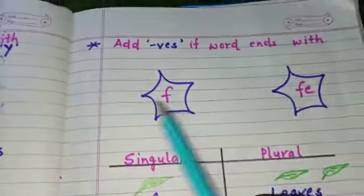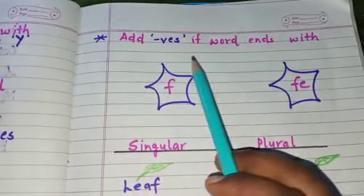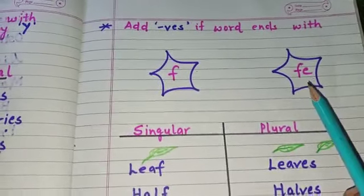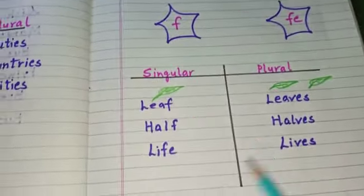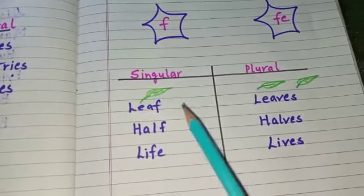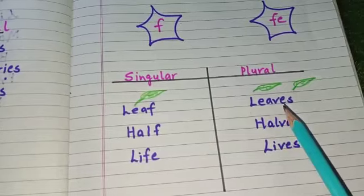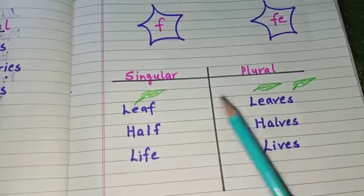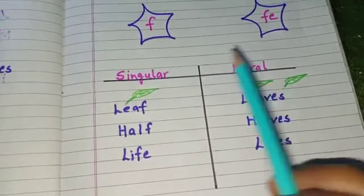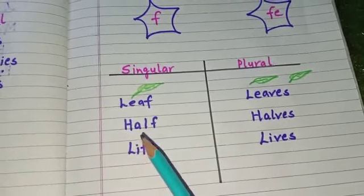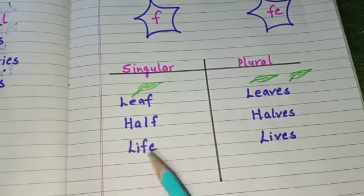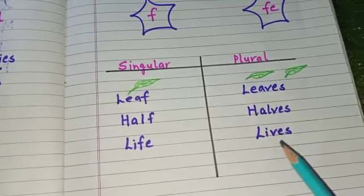The next point is: add 'ves' if the word ends with 'f' or 'fe'. Let's see examples. Leaf ends with 'f' — remove 'f' and add 'ves' to make plural: leaves. Next: half, halves; life, lives.